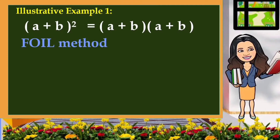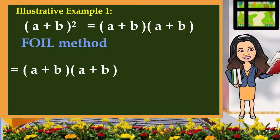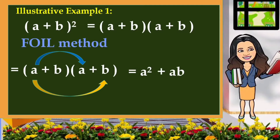F stands for finding the product of their first terms, then the outer terms, the inner terms, and the last terms. So let us take their products: a times a, that is equivalent to a squared; a times b, that is ab; b times a, that is also ab; and b times b, that is b squared.